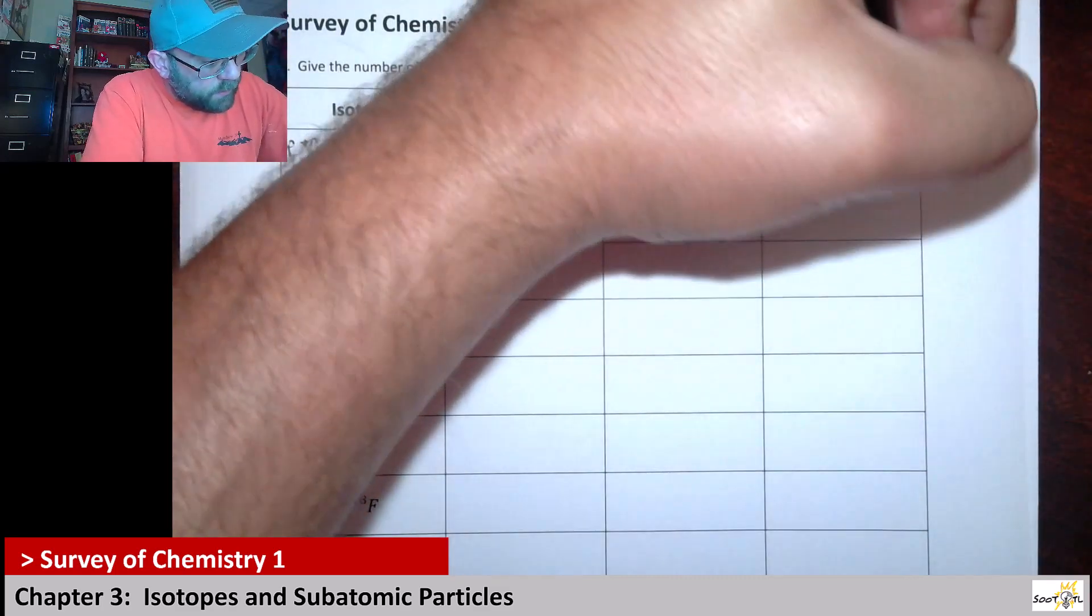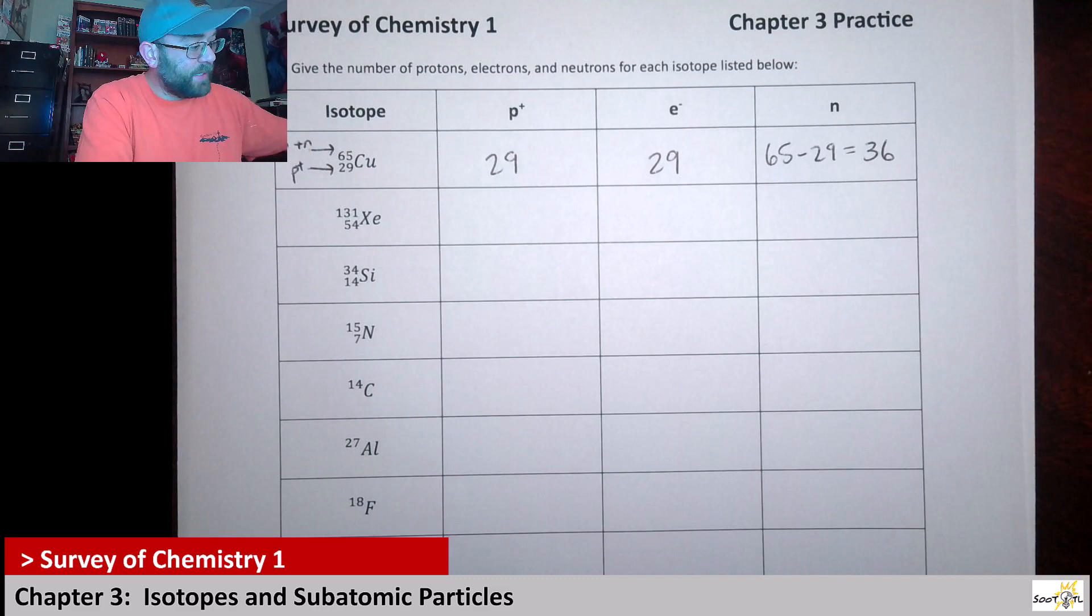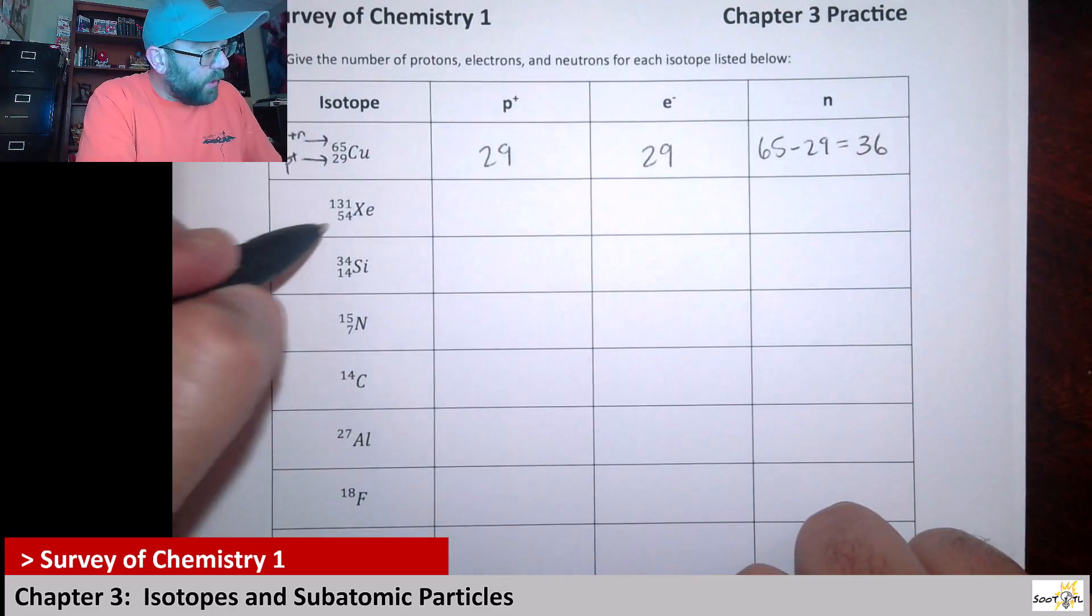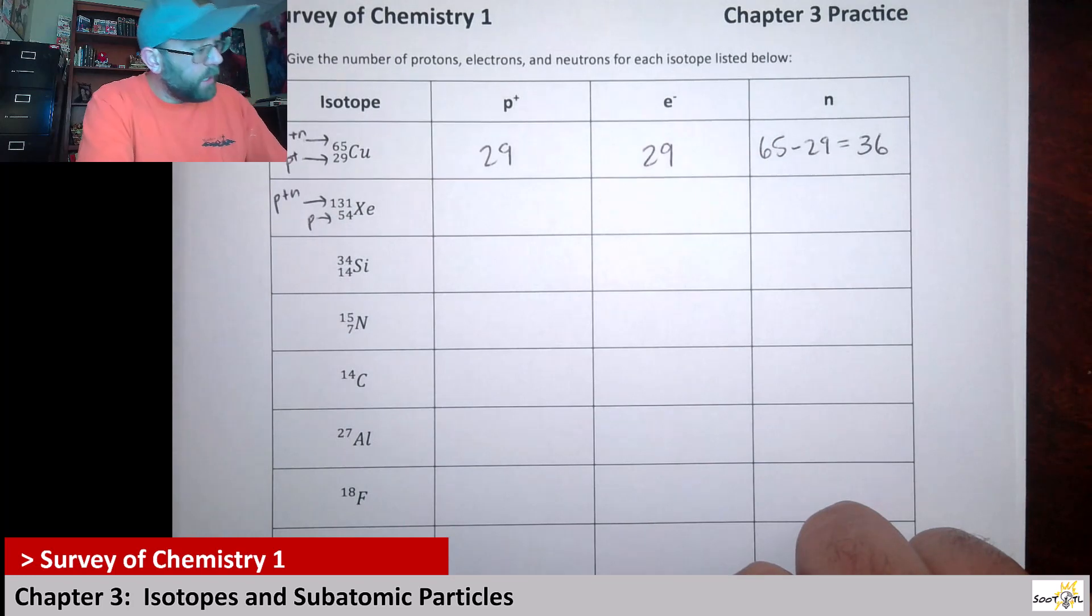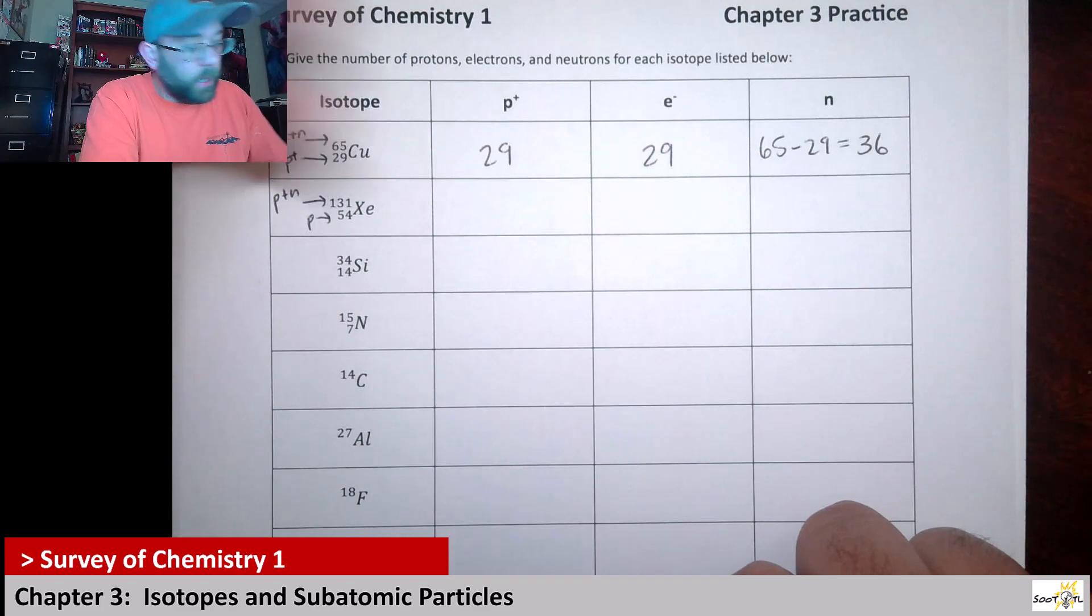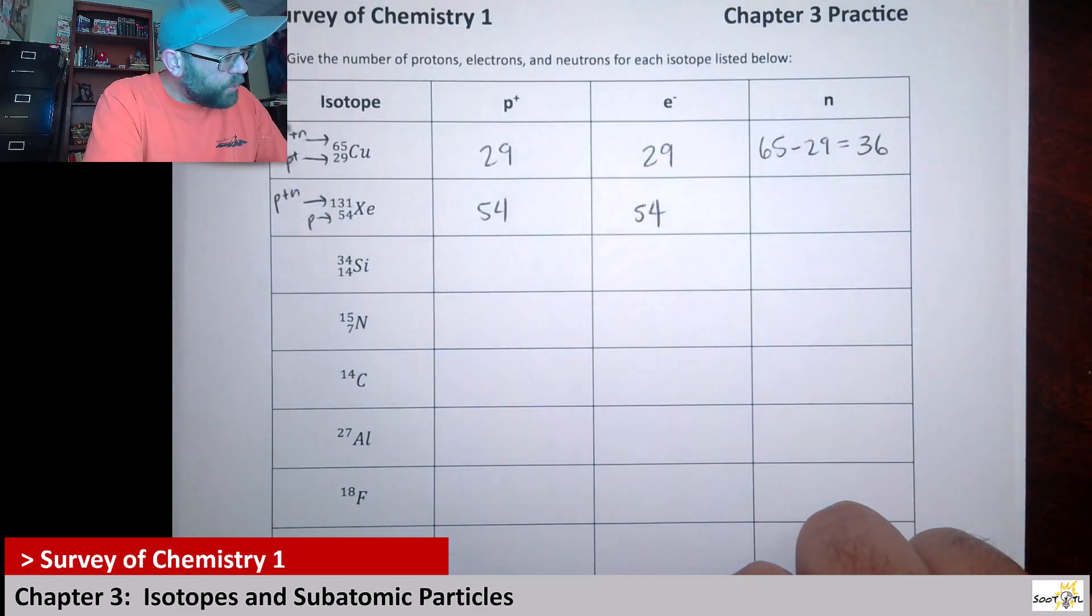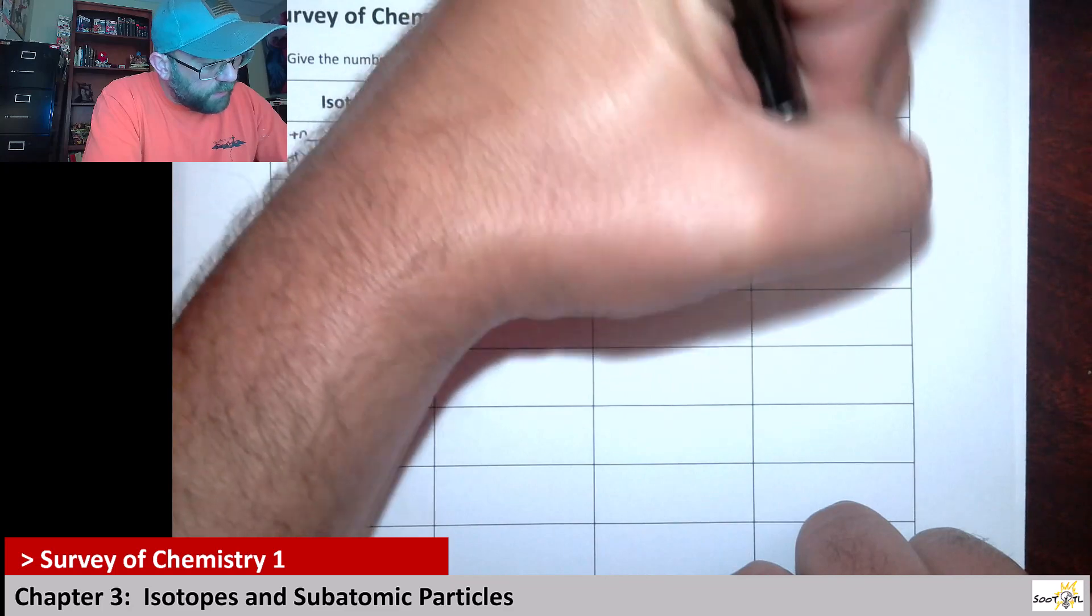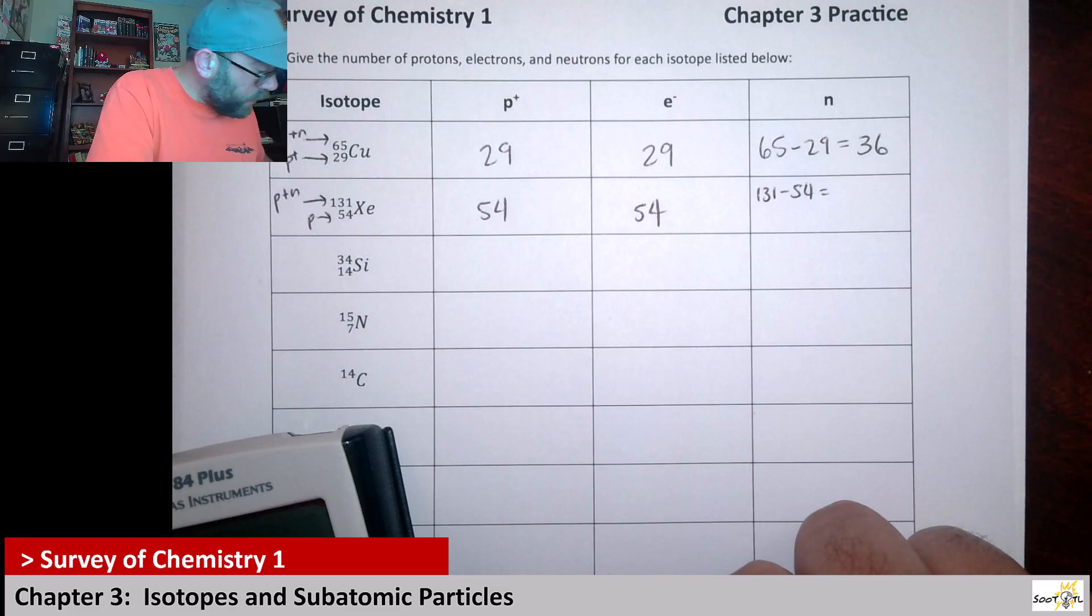Next up we have xenon. Xenon is a noble gas right here. It gives us this bottom number which is the proton, and the top number which is our protons plus neutrons. So yet again, remember protons and electrons are the same because all of these are neutral, so it's going to be 54 and 54. Then to get our neutron count, we're going to take this top number and subtract the bottom number, so 131 minus 54, that's going to be 77.